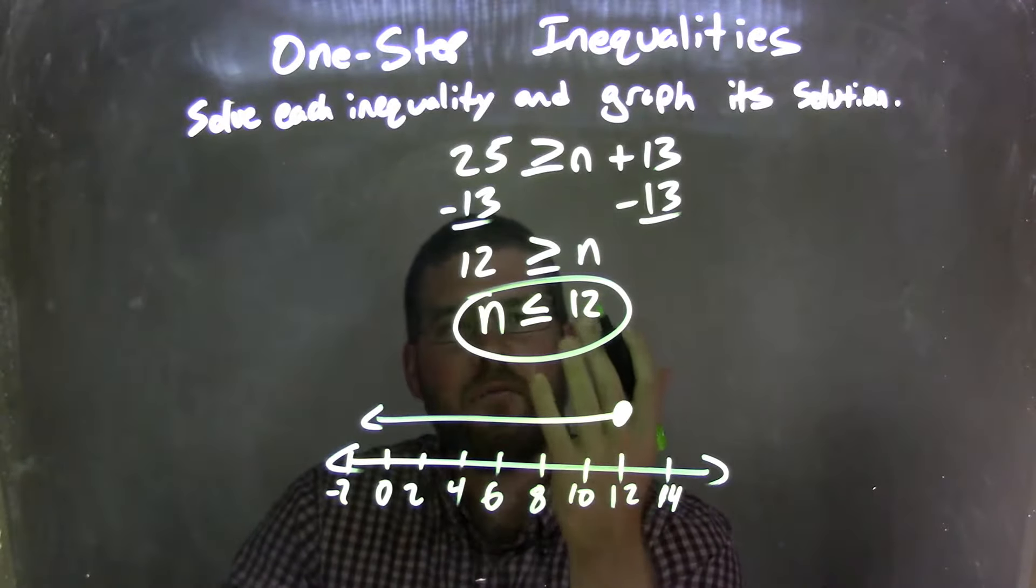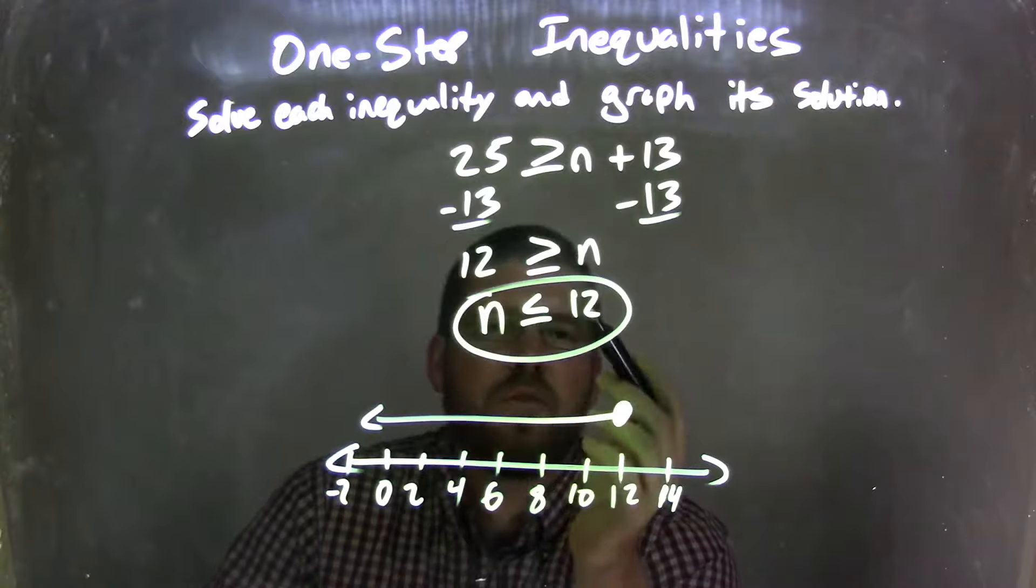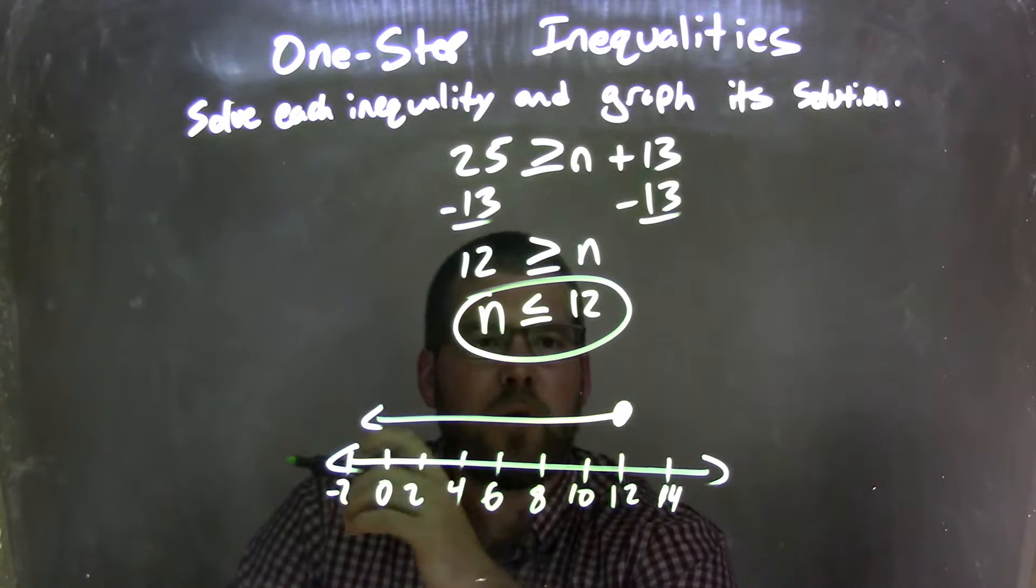Now I rewrote this, I have n come first. So, by doing that, n is less than or equal to 12, I need to flip the inequality and make it less than or equal to. And I graphed it.